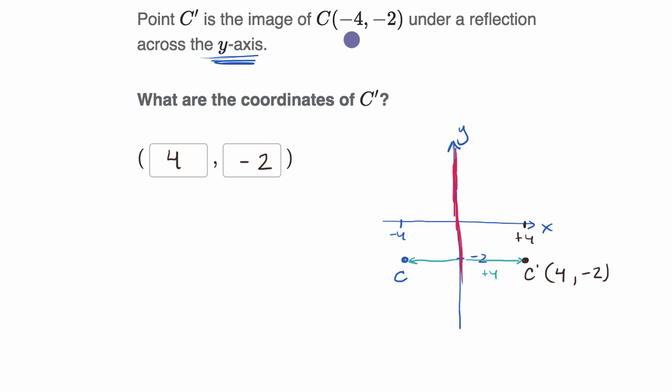If I'm flipping over the y-axis, my y-coordinate wouldn't change, but my x-coordinate would become the opposite, and I would end up in the fourth quadrant. And that's exactly what happened. The y-coordinate did not change, but then my x-coordinate, since I'm flipping over the y-axis, it became the negative of this, the opposite of negative four, which is positive four.